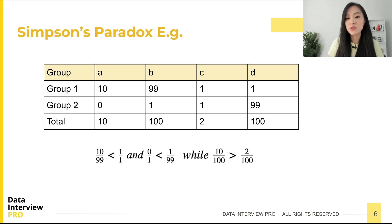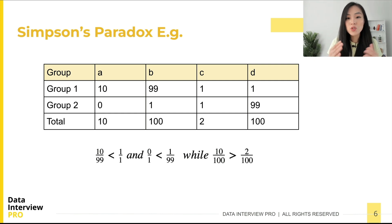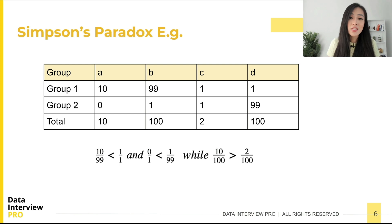Let me give you a simple example with only two groups of data. In group one, a1 over b1 is 10 over 99, which is less than c1 over d1, which is 1 over 1. In group two, a2 over b2 is 0 over 1, which is less than c2 over d2, which is 1 over 99. But when we look at both groups together, capital A — the sum of ai over the sum of bi — is 10 over 100, which is larger than the sum of ci over the sum of di, which is 2 over 100. This is a simple example of Simpson's Paradox.